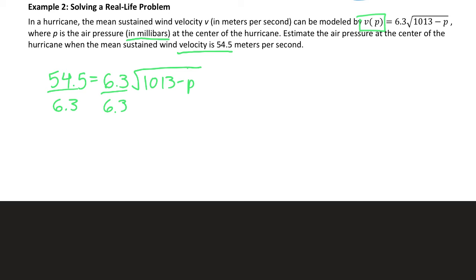So 54.5 divided by 6.3, I'm going to have to use a calculator for that one. 54.5 divided by 6.3 is a really long decimal. So I'm going to decide it's 8.6507935, or 3651. I'm going to round that to just two decimal places, 8.65 equals the square root of 1013 minus P. So what I did was, I divided 54.5 by 6.3, I left that number in the calculator, and I'm going to take that number literally, and just square it in my calculator, and I'm going to get 78 point, or sorry, 74, 74.84. That's going to equal 1013 minus P.